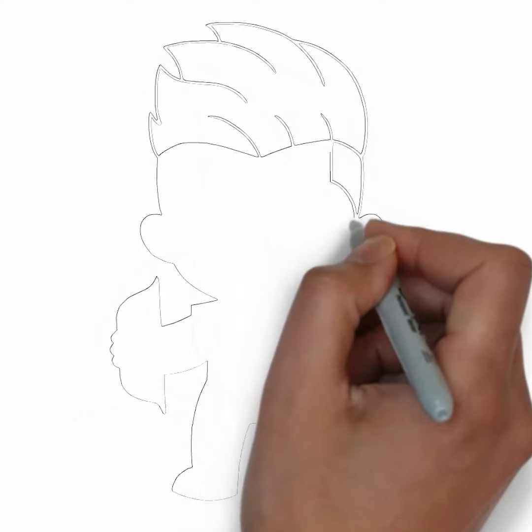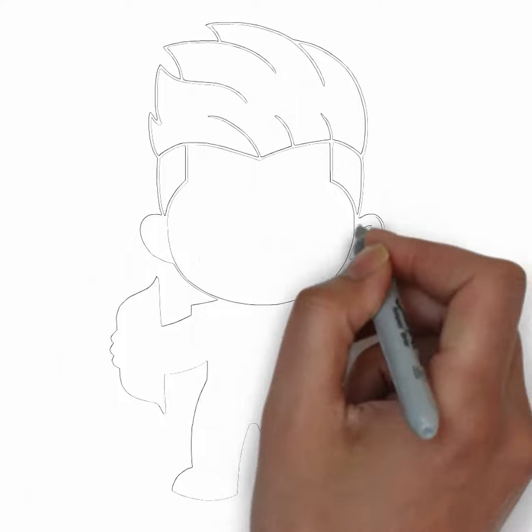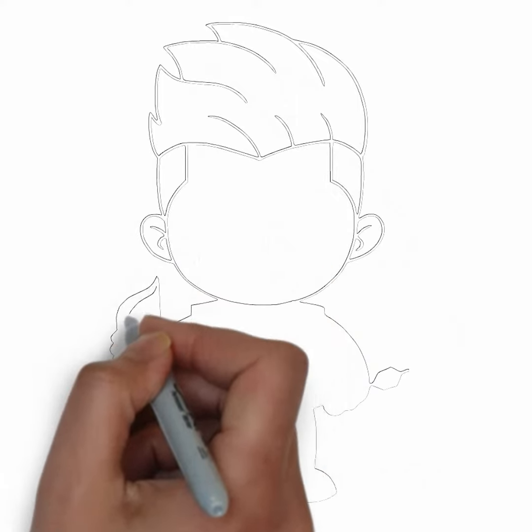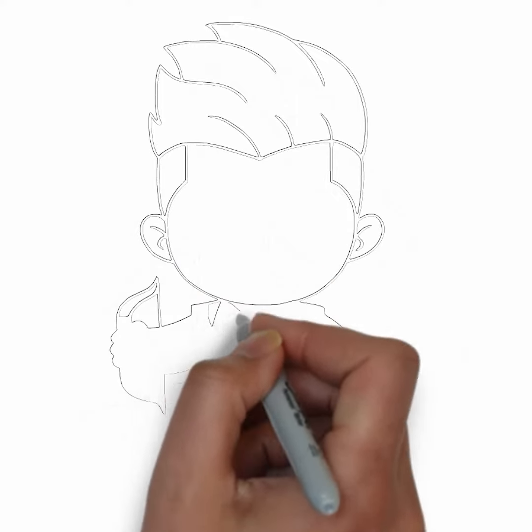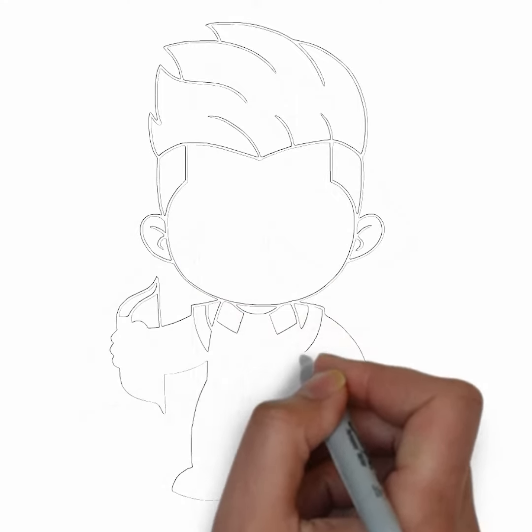Next, we'll start to add more details. Using darker, more defined lines, begin to add in the features of your subject. Pay close attention to the reference image or object you're drawing from, and take your time to get the details just right.